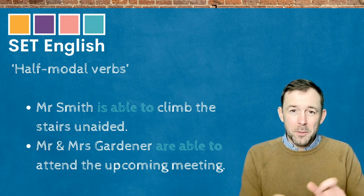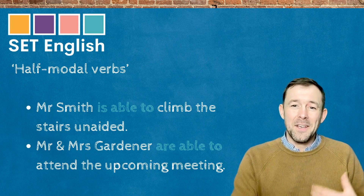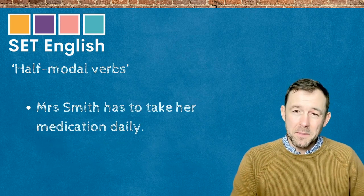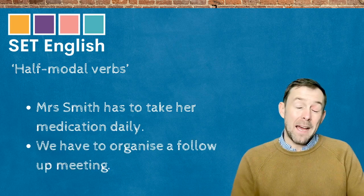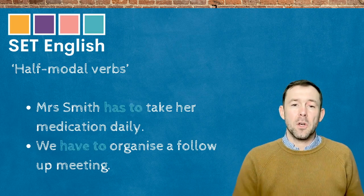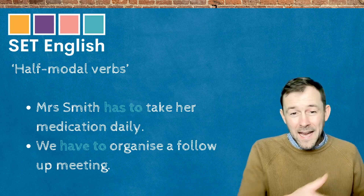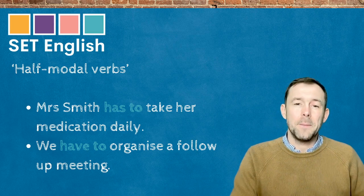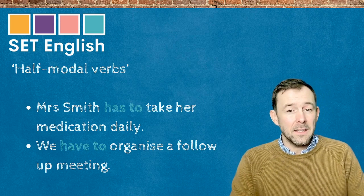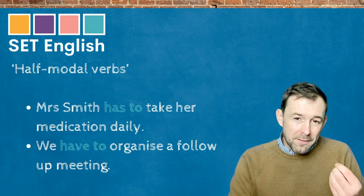We've got subject-verb agreement there. So the verb 'to be' for these half modal verbs changes, and notice that they end with 'to.' It's the same with 'have to.' Mrs. Smith has to take her medication daily. We have to organize a follow-up meeting. Again, we've got 'has' — subject-verb agreement — and 'have to.' Notice they've got 'to': 'has to take,' 'have to organize.' So we use the full infinitive with these ones.